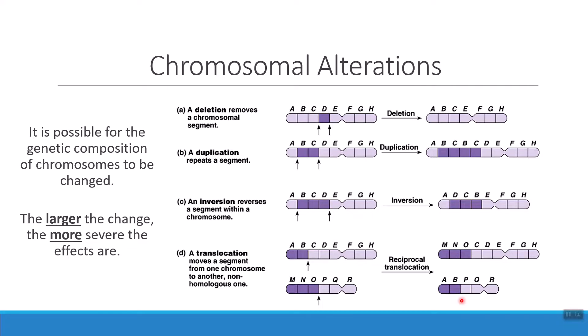Here's a hint as you're studying this for the quiz and the exam: make sure you can identify each of these types of changes in an image. So if I give you a picture and ask you what happened, you would want to tell me that a deletion happened — this gene is gone. Or if I showed you another picture, you'd want to be able to tell me it's a duplication, an inversion, or a translocation. Not only do you need to be able to describe what happens, make sure you can identify them as well.